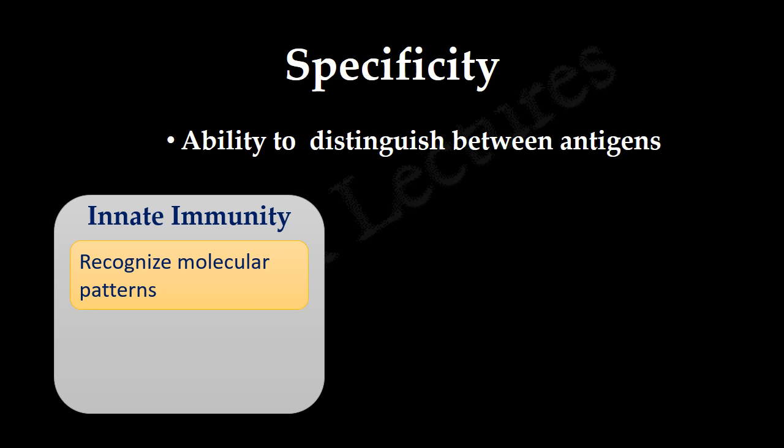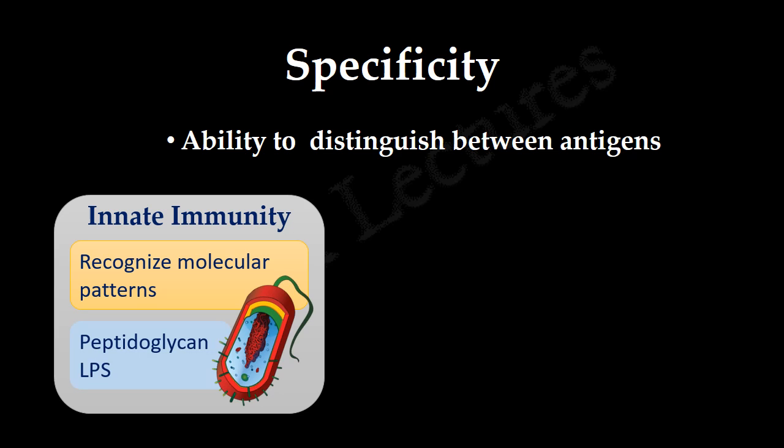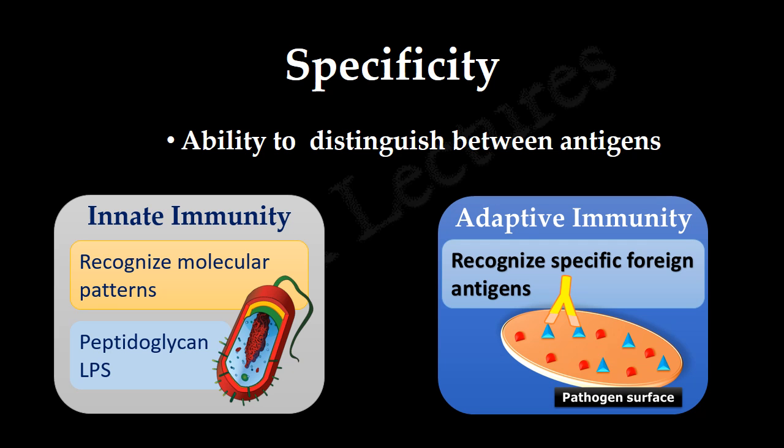For example, innate immunity recognizes peptidoglycan of gram-positive bacteria and lipopolysaccharide of gram-negative bacteria. But in the case of adaptive immunity, unique antigens are recognized which are specific to a particular pathogen.